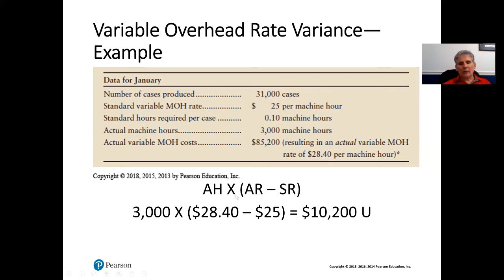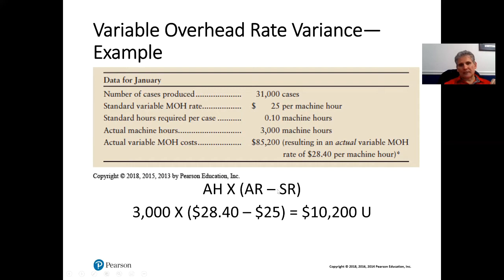We run the rate variance formula: actual hours multiplied by (actual rate minus standard rate). The actual hours are 3,000, multiplied by $28.40 minus $25.00 per machine hour. The difference between the actual rate and the standard rate, multiplied by 3,000 hours, gives us $10,200 unfavorable. It's unfavorable because the actual rate was higher than the standard rate.